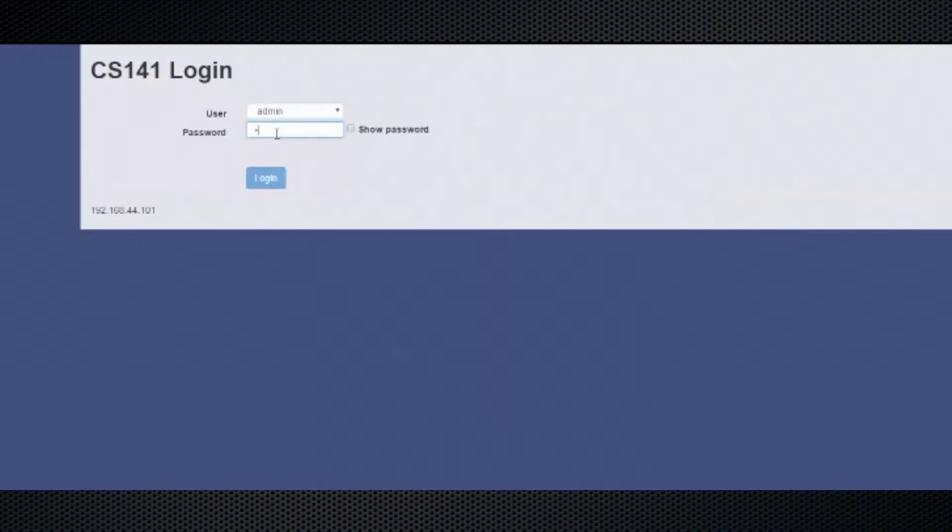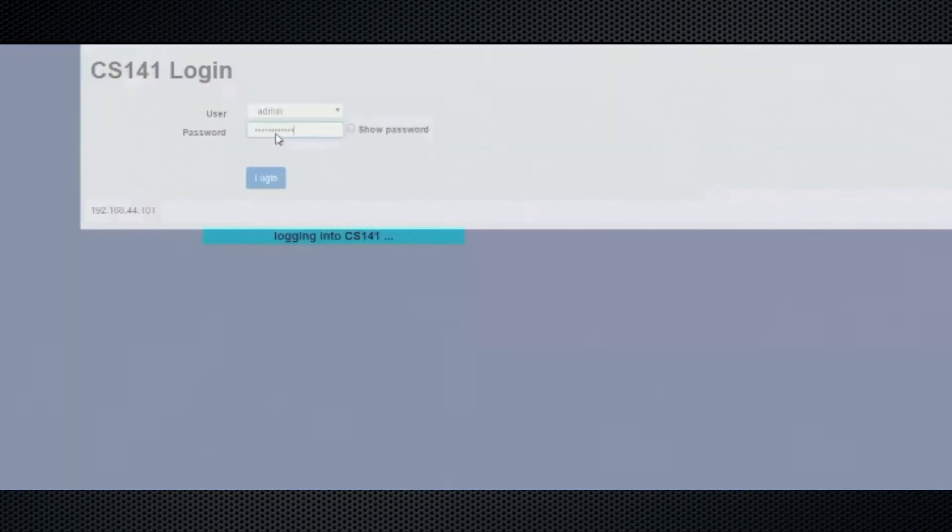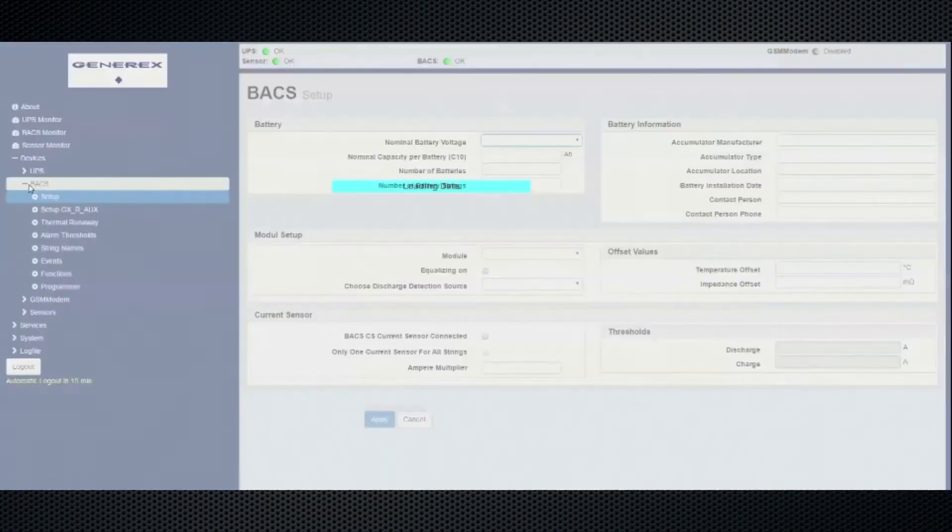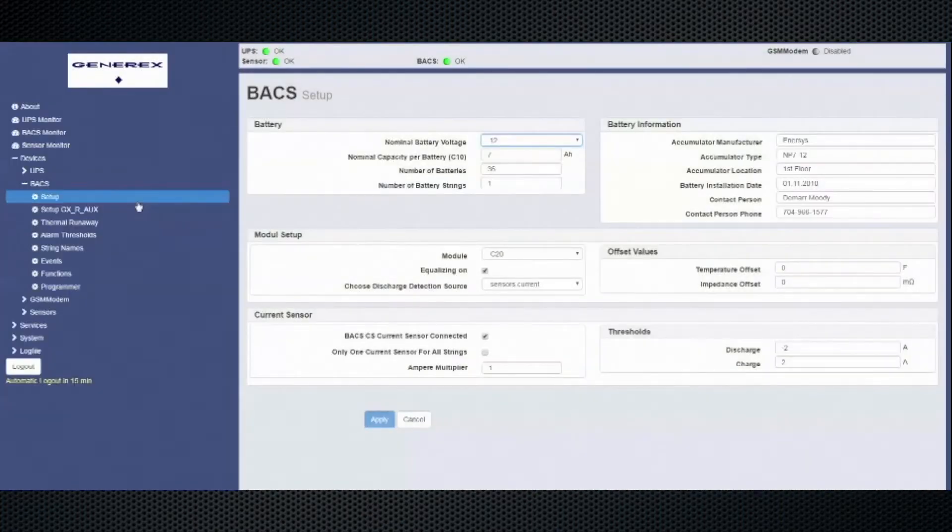We now begin the Bax web manager configuration setup. Log in to the Bax system using your username and password. Go to the Bax setup page. From here you can enter nominal battery voltage, amp hours of the battery, the number of batteries, number of strings. You can enter any battery information such as types and locations.